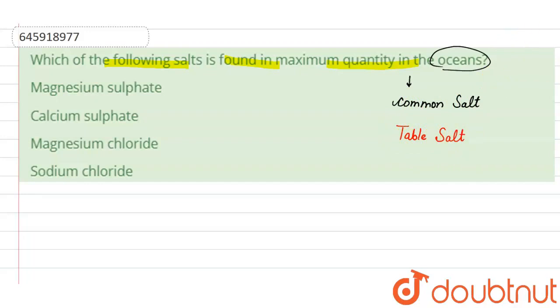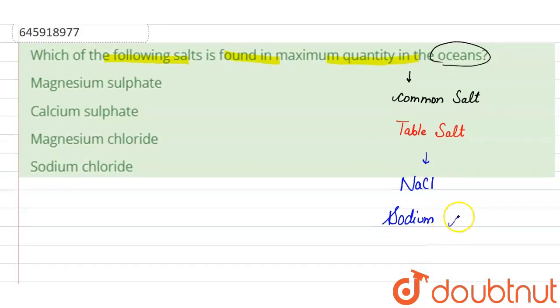And the formula for table salt and common salt is NaCl. As we know in scientific terms, Na is the symbol of sodium, and Cl is the symbol of chlorine.